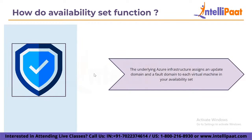Fault domains are a group of virtual machines that use the same power source and network switch. By default, virtual machines in your availability set are divided into three fault domains. While putting your virtual machines in an availability set does not protect them from operating system or application-specific problems, it does mitigate the effect of physical hardware failures, network outages, or power outages. Disk fault domains are also aligned with VMs, ensuring that all managed disks attached to the virtual machines are in the same failure domain.